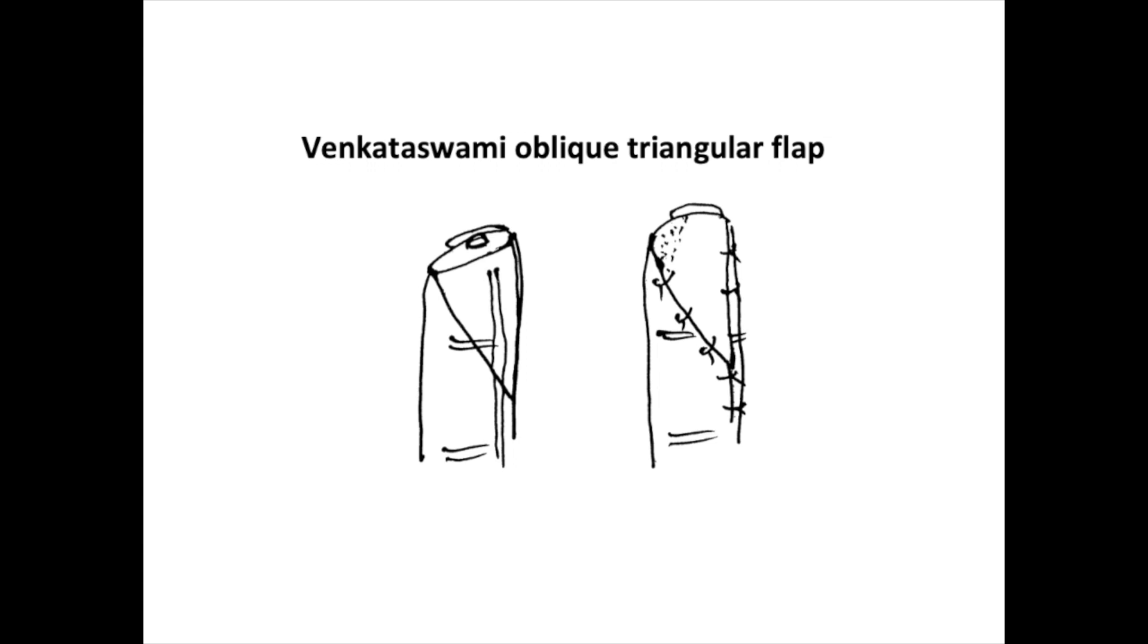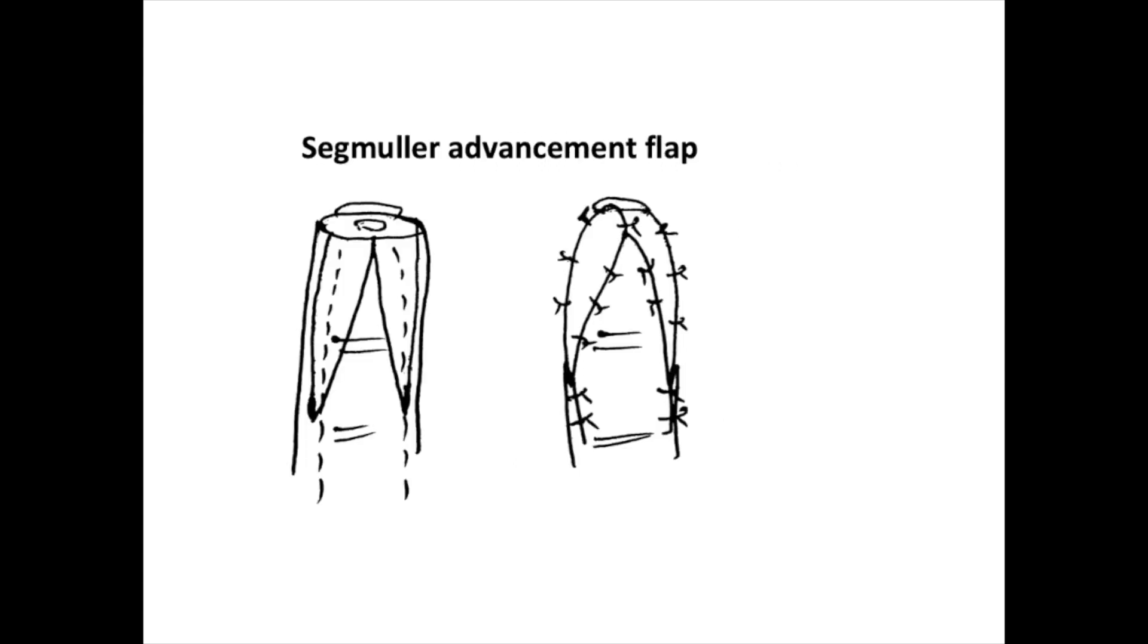The Segmuller advancement flap is also a modification of the V-Y flap, where V-Y flaps are harvested based on both side neurovascular bundles, so the entire flap is sensate. There is another modification in the volar V-Y advancement flap where the flap is taken wide, and then the distal edges are brought towards each other and sutured to each other to provide a bulk and padding to the newly reconstructed fingertip or the pulp.